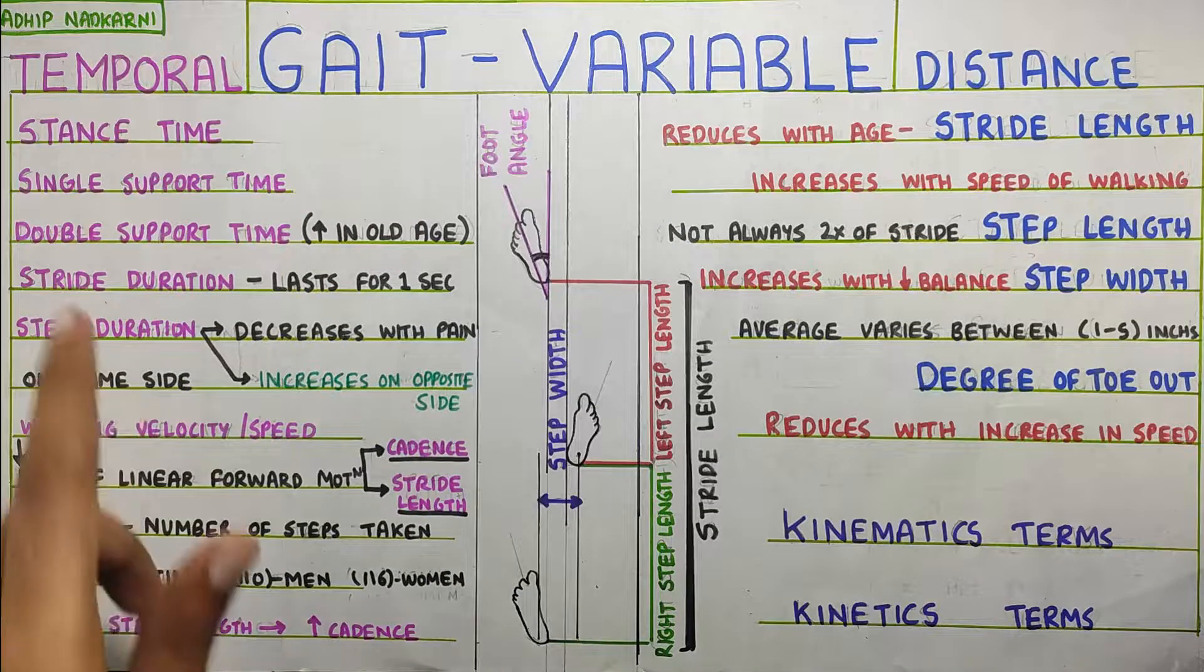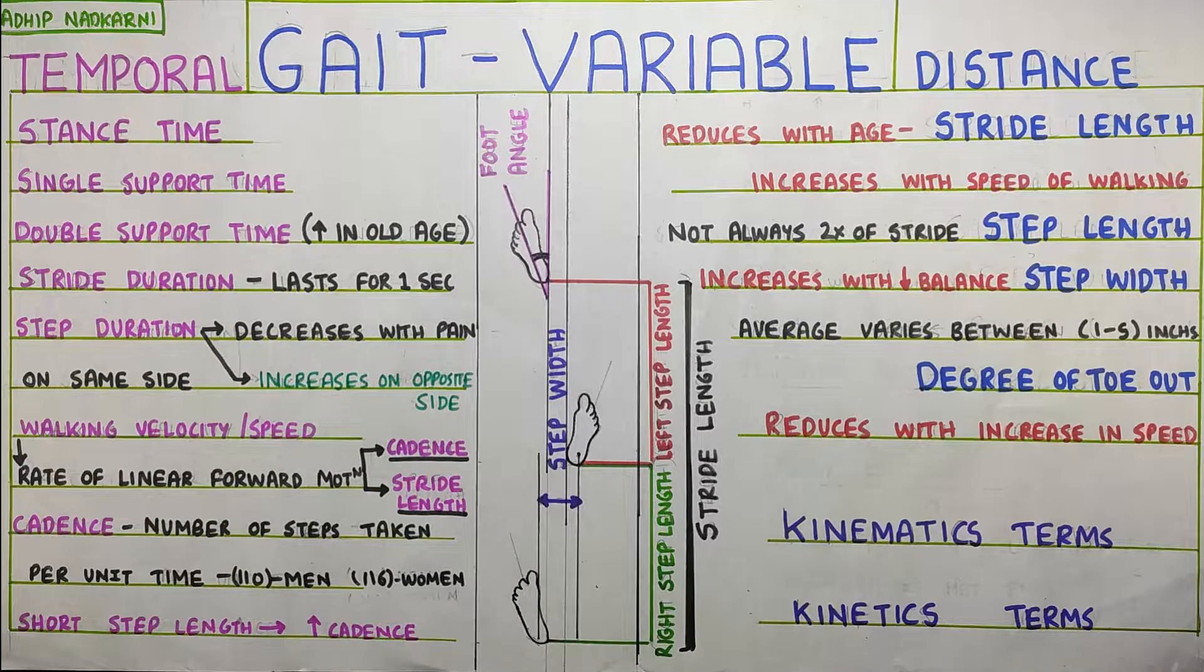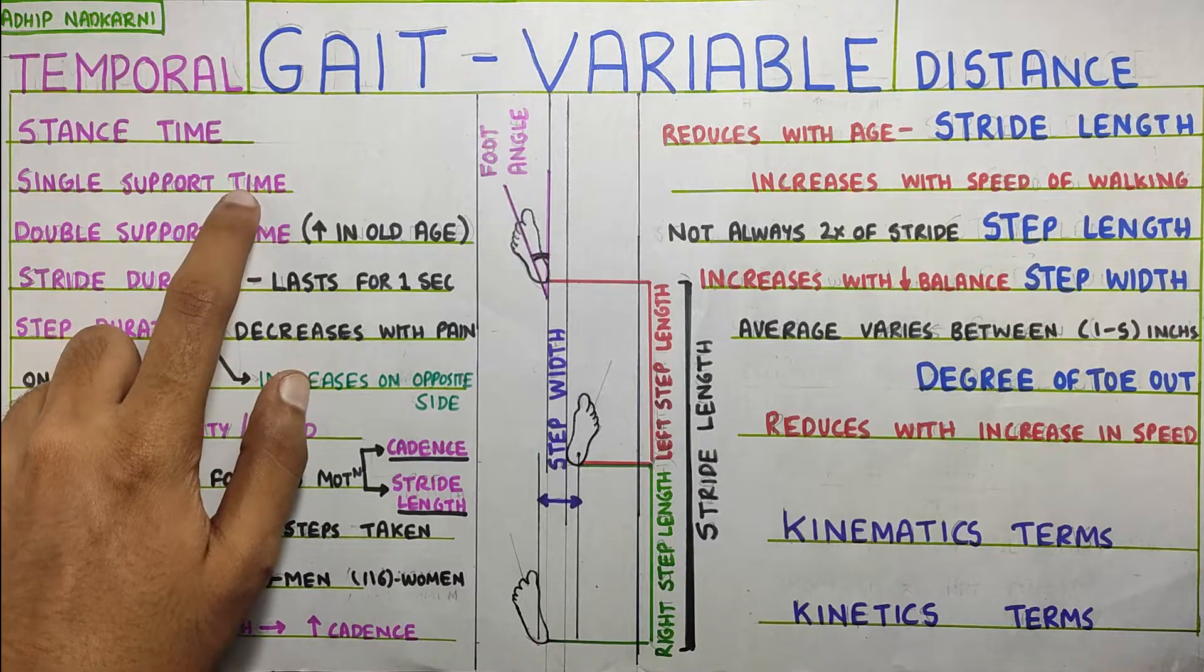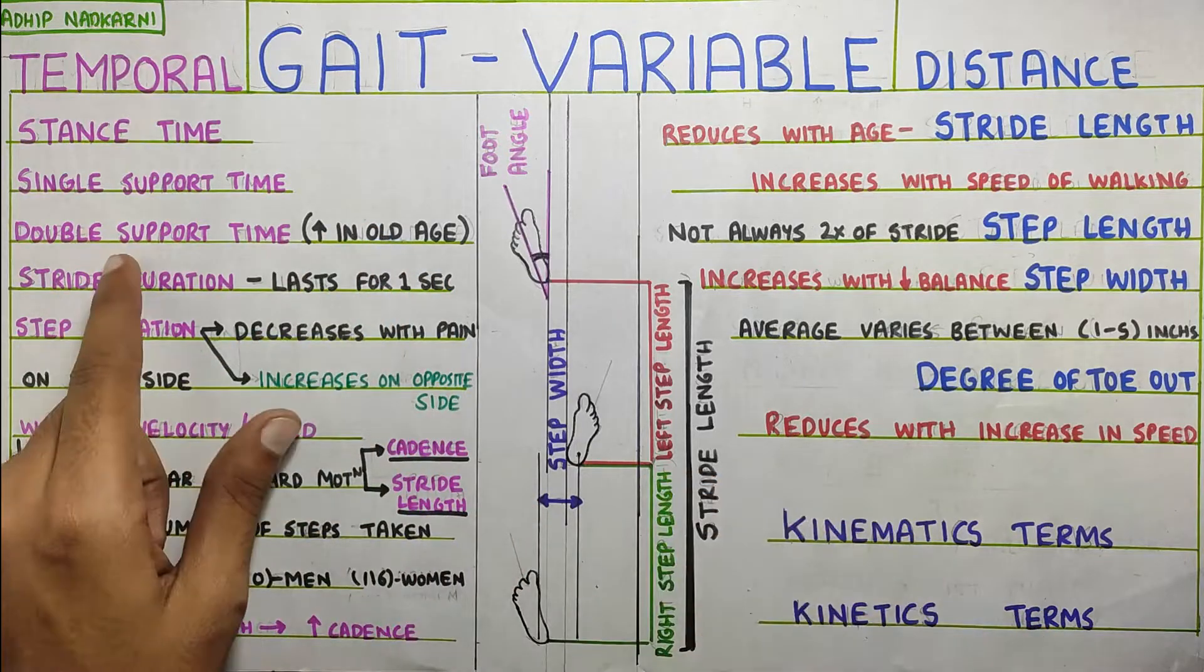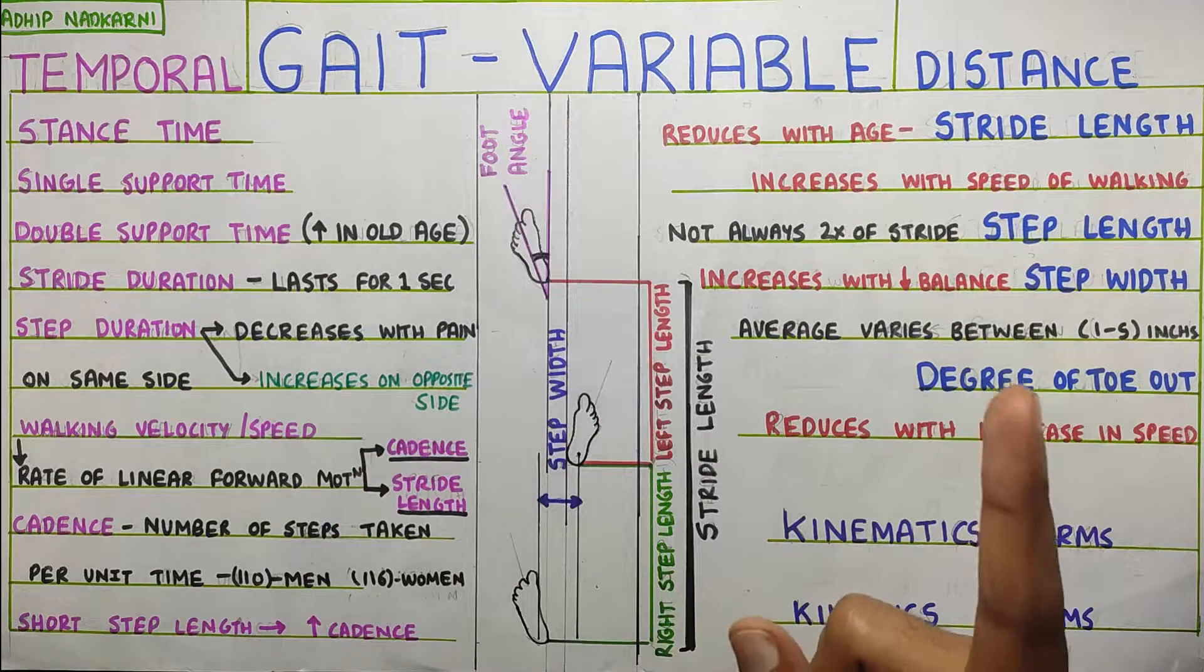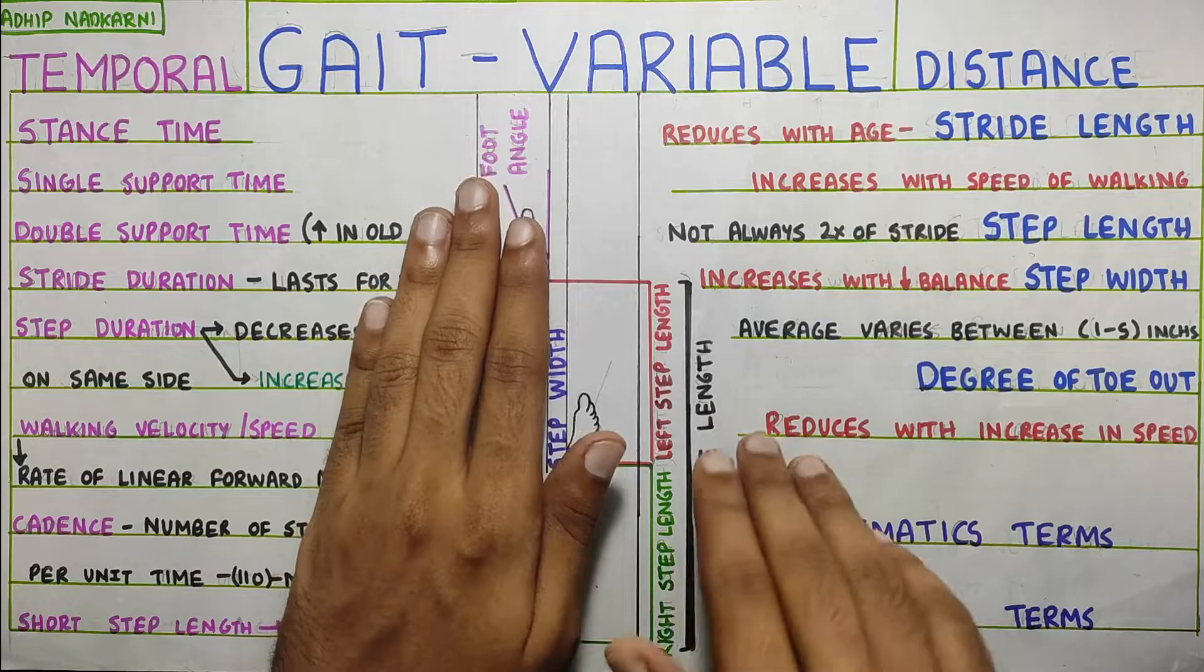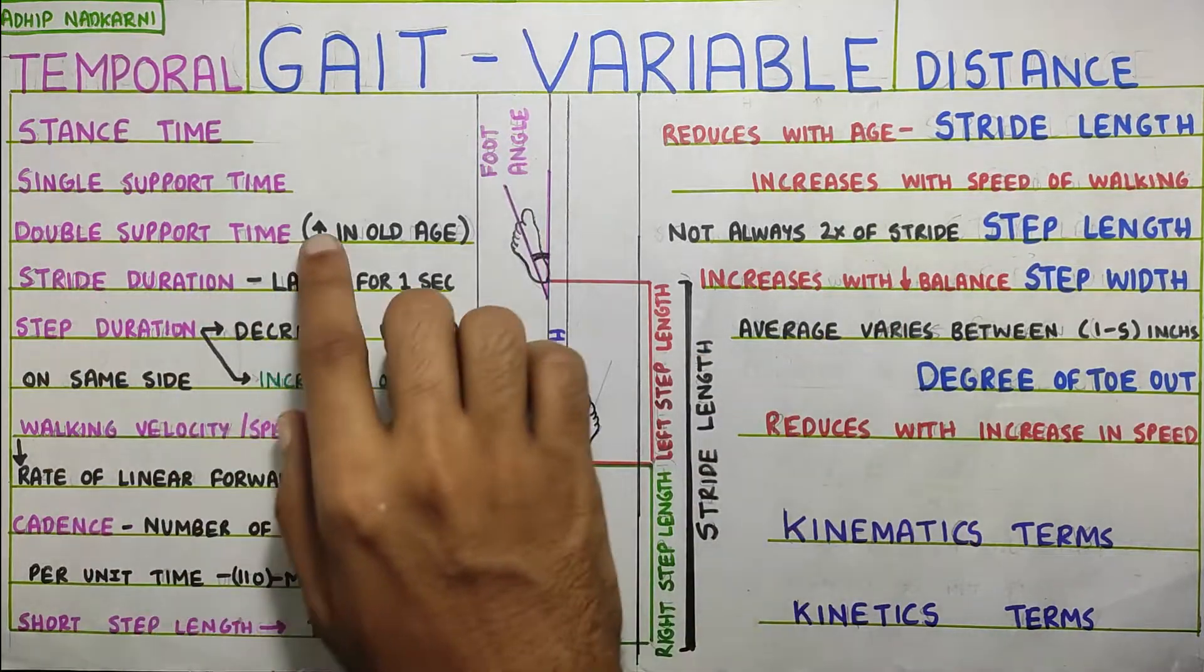So going to the temporal, there is the stance time, there is the single support time and double support time. Stance time will be the amount of time that you will spend during the stance phase on one extremity in one gait cycle. Then the single support time is basically when you are on your one foot. The time spent when you are on your one foot and then the double support time is the time that you spend on both your foot, which we had talked about in the first video. Basically, you keep your first step, right? First step, second step. And just before you take your other foot off the ground, there will be a point where both your foot will be in contact with the ground. That will be your double support time.